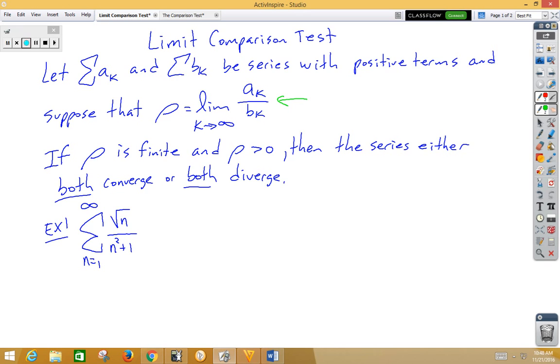It says if rho is finite and rho is greater than zero, then the series either both converge or both diverge. So it's pretty easy to get the both converge or diverge, and then you simply have to compare what's going on.